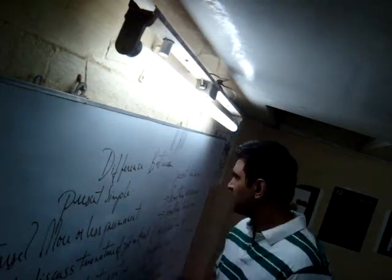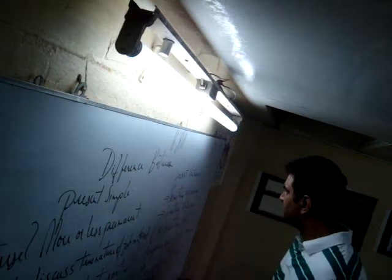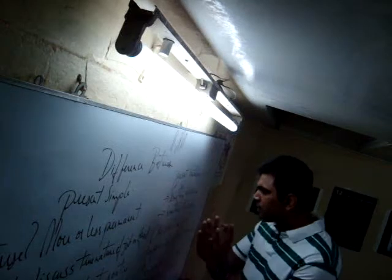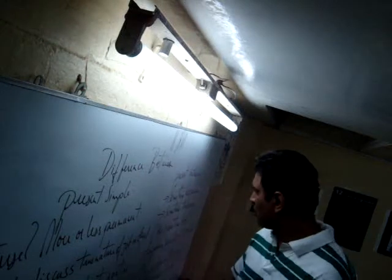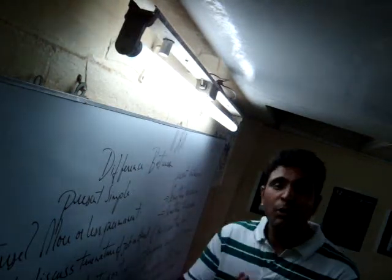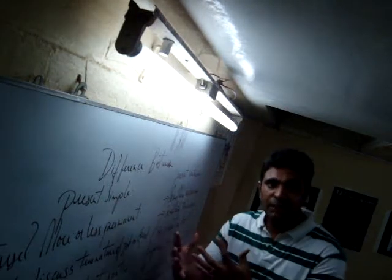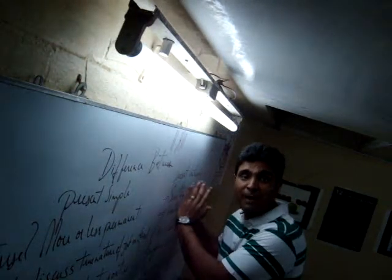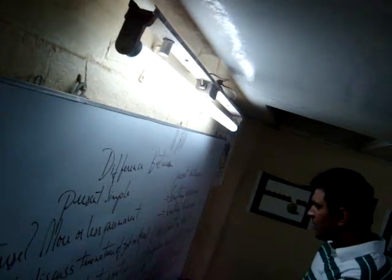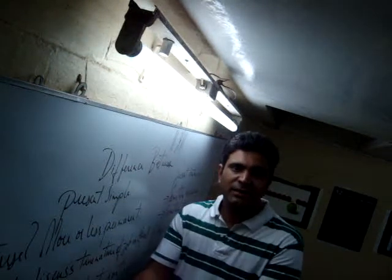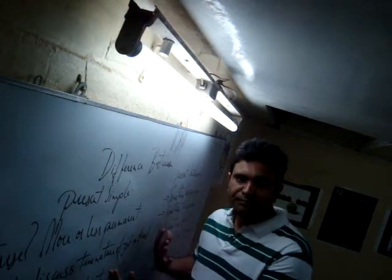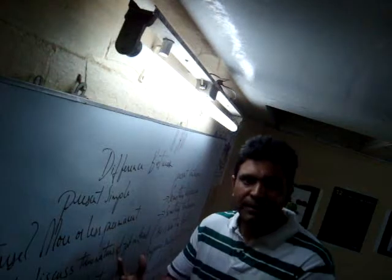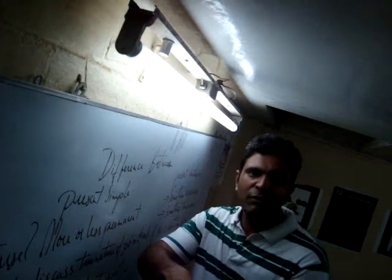We use present continuous tense when we have to say something which is happening right now — something which is temporary in nature, which is not permanent. For example, 'I am working on this project' or 'I am explaining grammar lessons.' This is temporary; I'm doing it right now and it will be finished later.